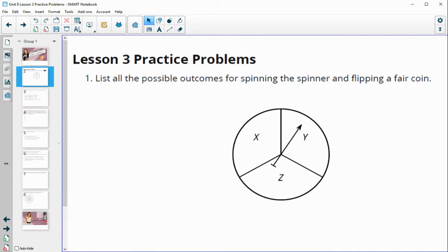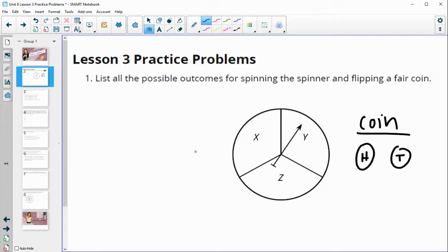Number one says list all possible outcomes for spinning a spinner and flipping a fair coin. So we've got the spinner shown and then for the coin, we know that the two options are either it's on heads or it's on tails.